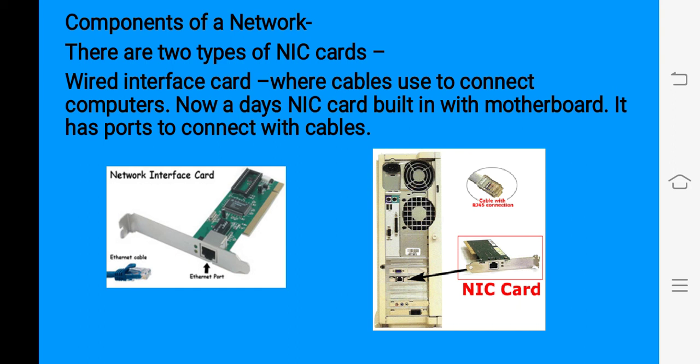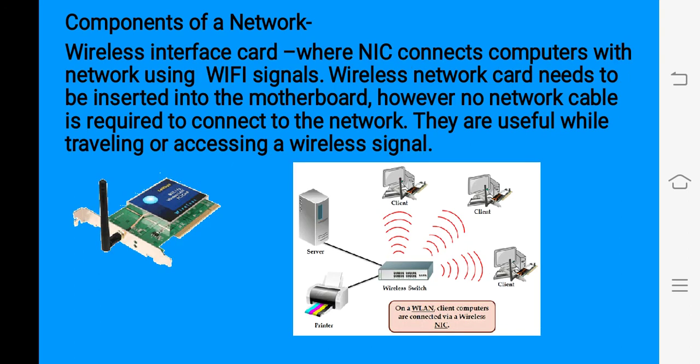There are two types: wired interface cards, where ethernet cables are used to connect to the port of the network interface card, and nowadays NIC is built into the motherboard. The other type is a wireless interface card, where the network interface card uses Wi-Fi signals. A wireless NIC needs to be inserted into the motherboard; however, no network cable is required — they use wireless signals.